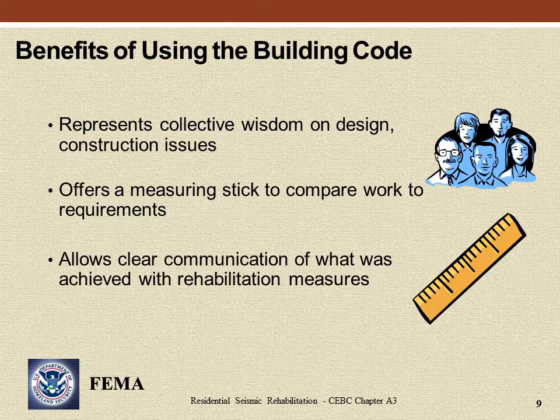Whenever possible, it is highly desirable to have voluntary rehabilitation work conform to the minimum requirements of the building code or to other published standards. Building codes represent the collective wisdom of building officials, design professionals, and industry representatives that has evolved over time in a process of public debate. Building code provisions therefore represent a broad consensus on appropriate minimum design and construction standards and are generally more appropriate guides than decisions based on individual opinion. Building code provisions also offer a measuring stick to compare work done to requirements regarding seismic load level and detailing requirements. The prescriptive provisions of CEBC Chapter A3 serve this function, establishing minimum recommended levels of seismic rehabilitation — this was the reason for California's adoption of Chapter A3.